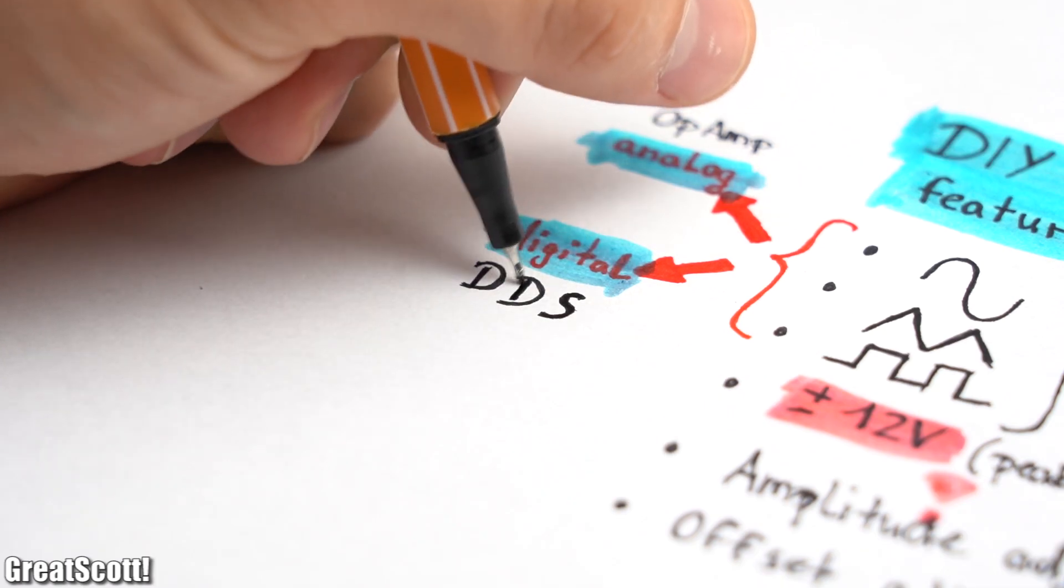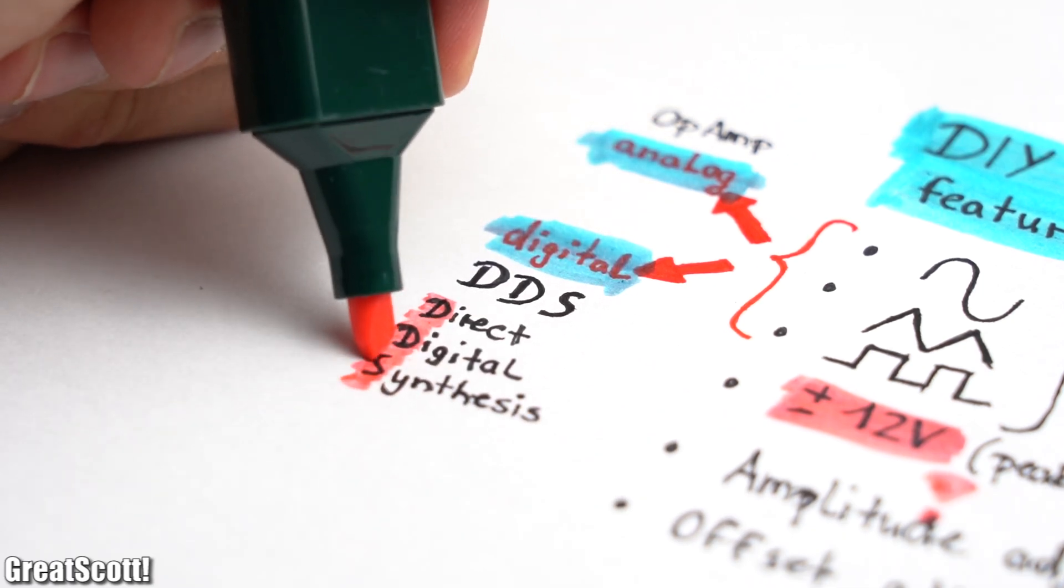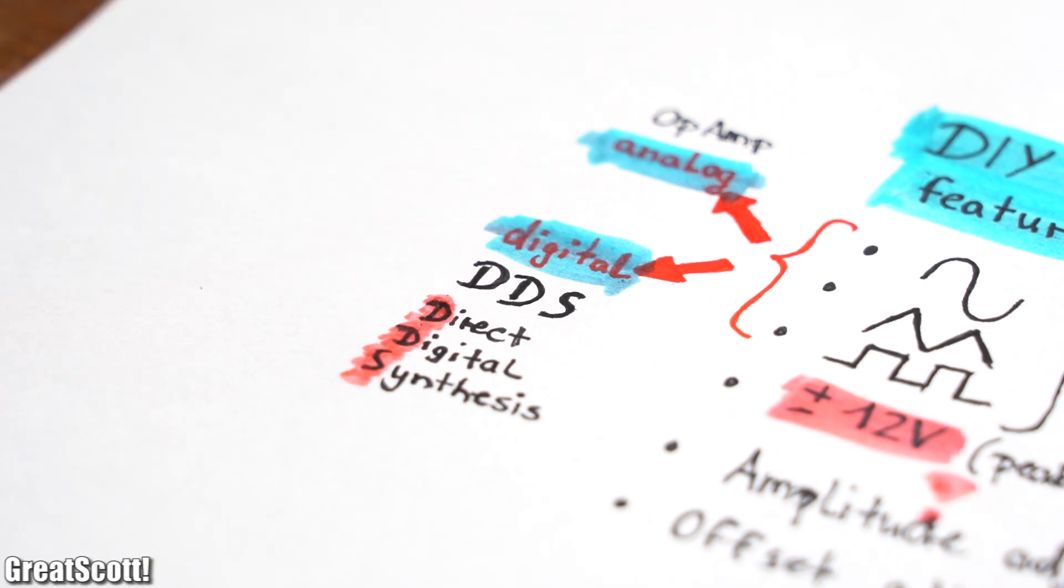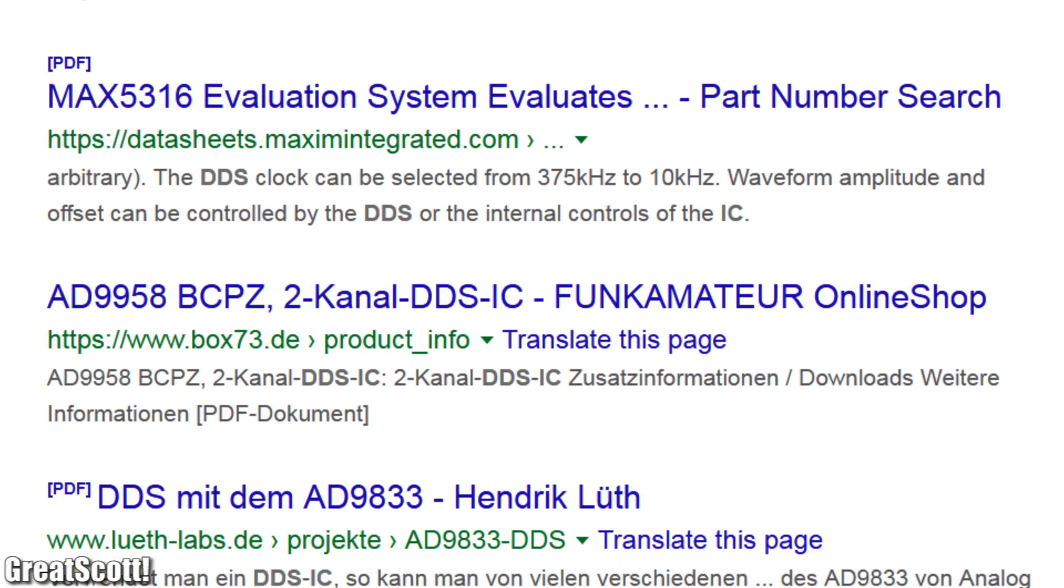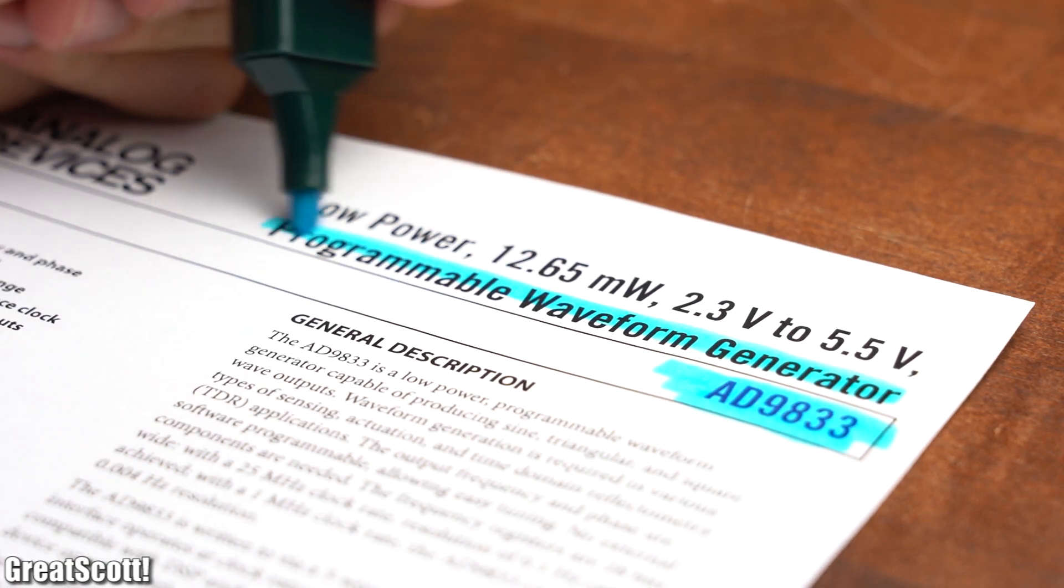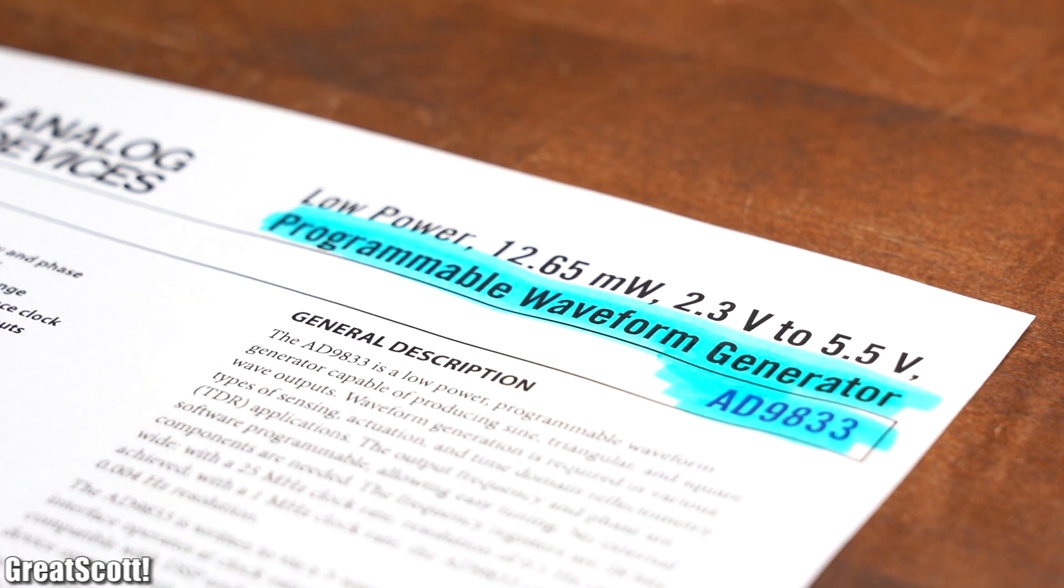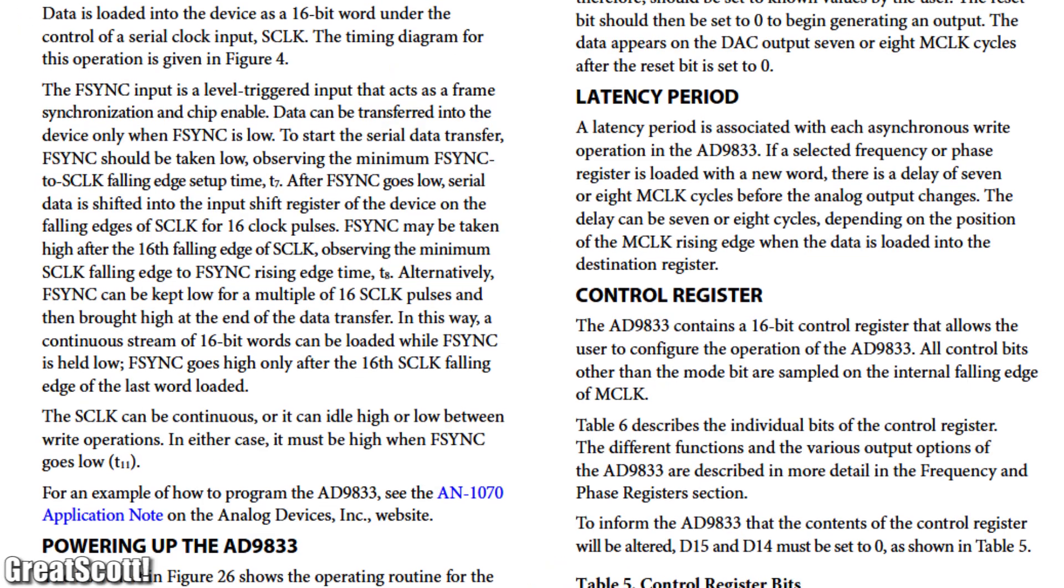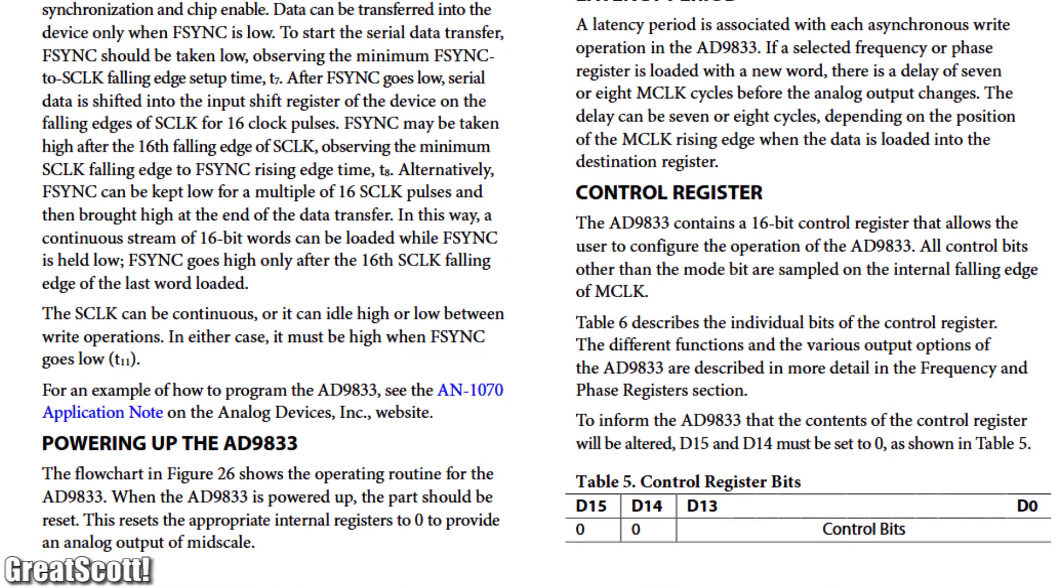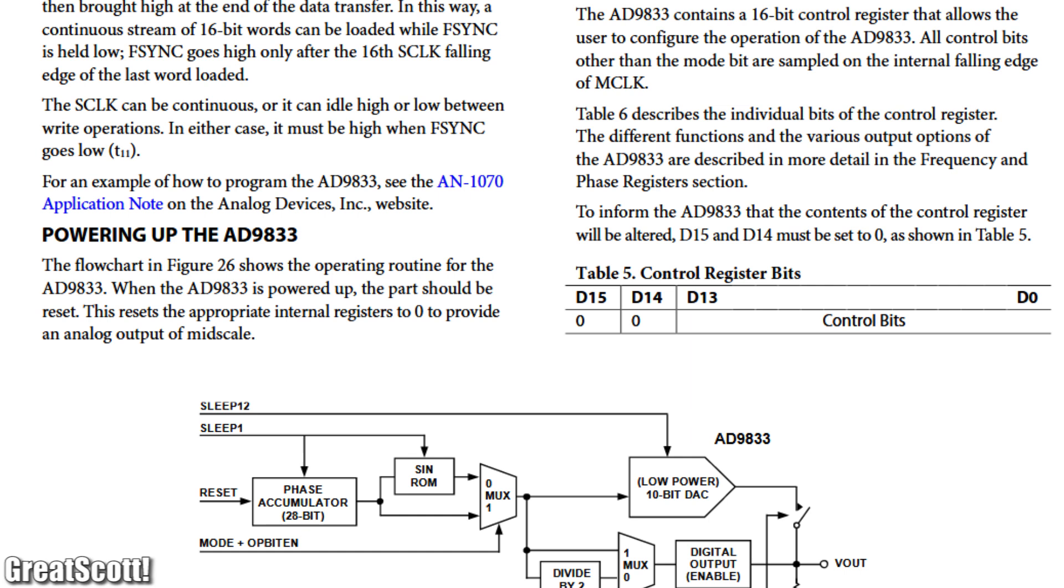So let's turn to digital and let's talk about DDS, which stands for Direct Digital Synthesis. To explain it better though, I firstly searched for a DDS IC and found this AD9833 programmable waveform generator IC. Its functional block diagram might seem confusing at first, but after studying the 21 pages of the data sheets, it is pretty clear how this DDS IC works.